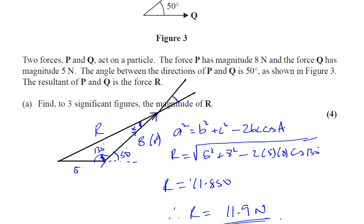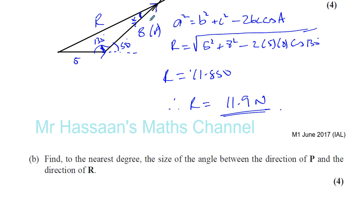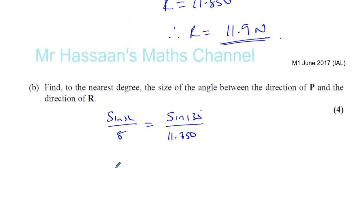We can actually use the sine rule to find it. We know that the sine of X over the side opposite it, which is 5, is equal to the sine of 130 over the angle opposite it, which is R, which was 11.850 before we rounded it. Using it in more accurate form is better. So we can find what X is. X is going to be inverse sine of 5 times the sine of 130 over 11.850. I'll put it in more accurate form to keep accuracy in our answer.